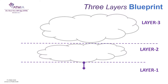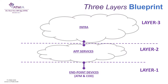The Next Gen ATM Architecture Blueprint contains 3 layers. The first layer is the Endpoint Devices layer for the ATM and customer owned devices. The second layer is the App Services layer, providing services to the Endpoint Devices. The third layer is the infra layer of the ATM Deployer with ATM Channel Services.